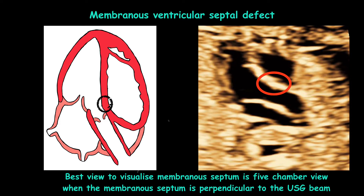Now let us see the membranous ventricular septal defect. It is best visualized in the five-chamber view. Here you can see the line diagram of the five-chamber view as well as the ultrasound image of the five-chamber view — these are all normal images. We prefer the five-chamber view because in this view the membranous septum is perpendicular to the ultrasound beam.